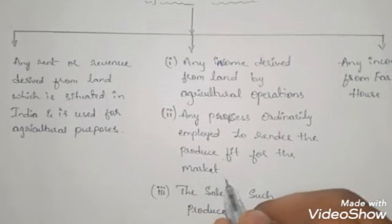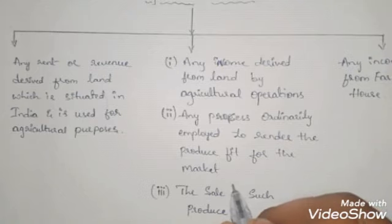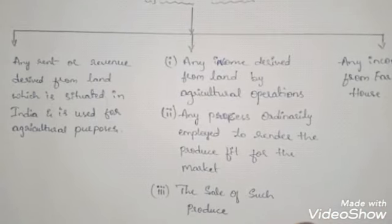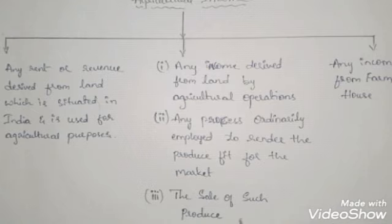Any process ordinarily employed to render the produce fit for the market — meaning further processing in industry may be required to make products ready to sell. For example, paddy grown on an agricultural farm cannot be sold directly in the market; further processing is required to convert it into rice. Revenue generated by such activities, or by selling such processed products in the market, will also be treated as agricultural income and will be exempt from tax.